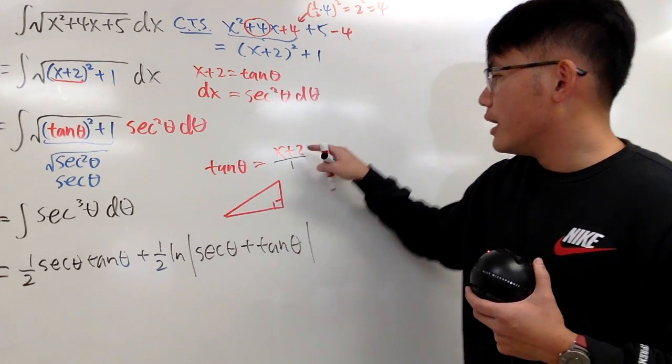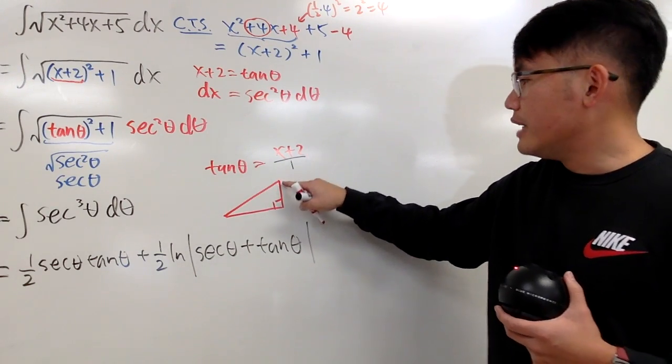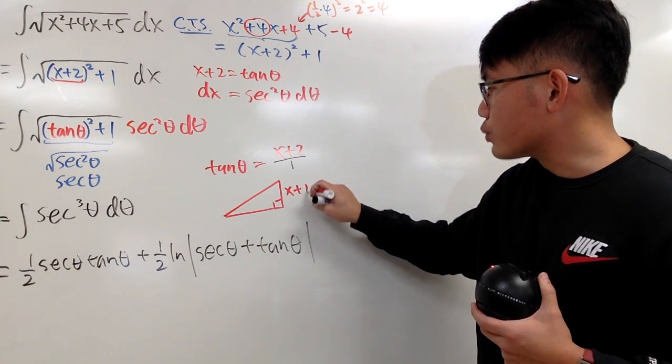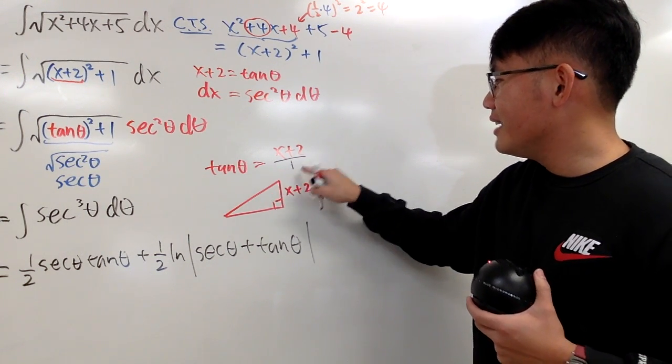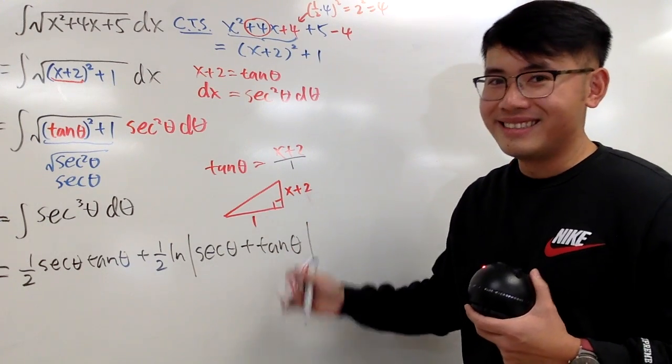Right angle here. Tangent is the opposite. So here we have x plus 2. Over the adjacent. So here is the 1.